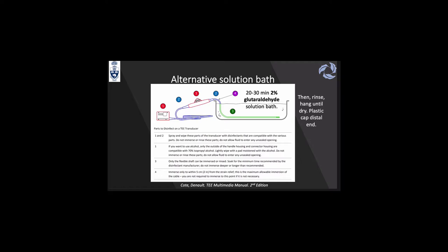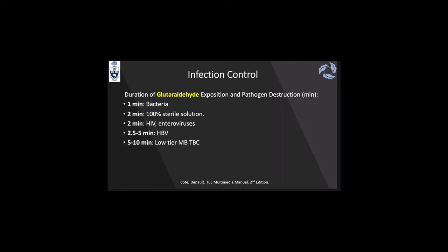Why is 20 minutes so important, and can we shorten it in an emergency? Under glutaraldehyde exposure, pathogen destruction happens as follows: within the first minute all bacteria are gone; at two minutes you achieve 100% sterility and kill HIV and enteroviruses; up to five minutes is needed to kill hepatitis B virus; and a maximum of 10 minutes is needed to reach a very low titer of Mycobacterium tuberculosis. That is why it is so important to keep the probe in for 20 minutes to ensure a completely sterile probe.